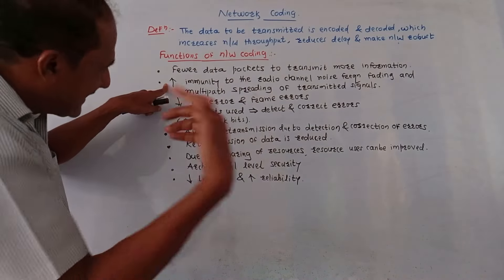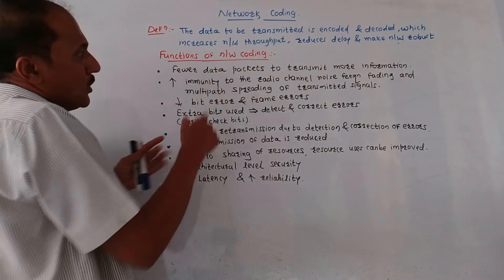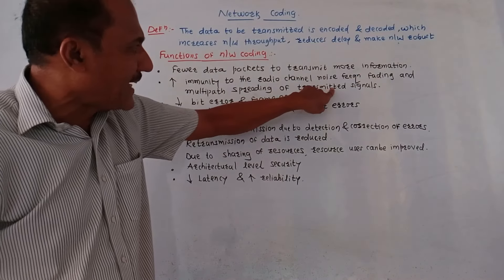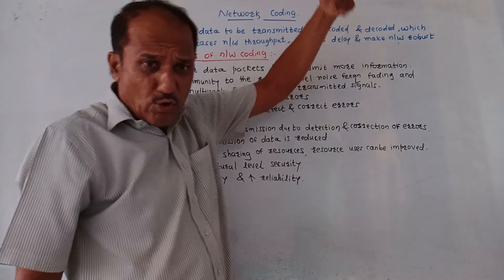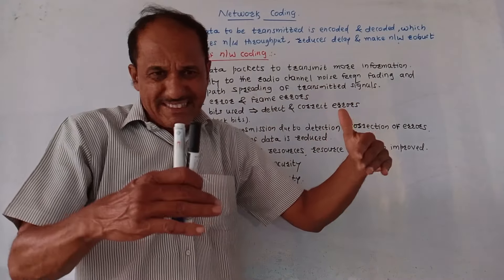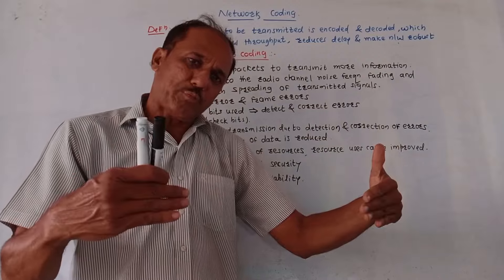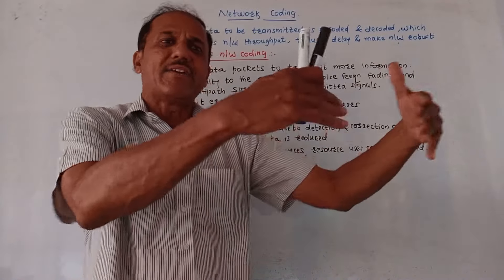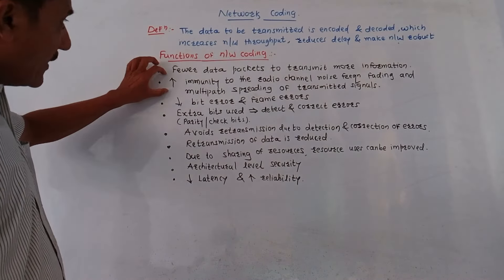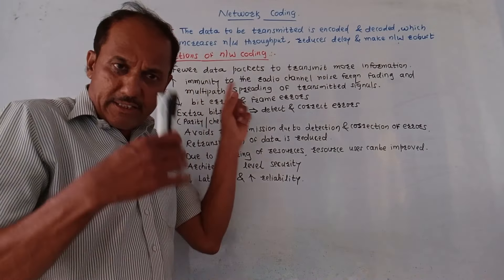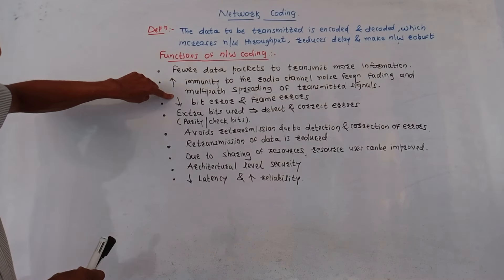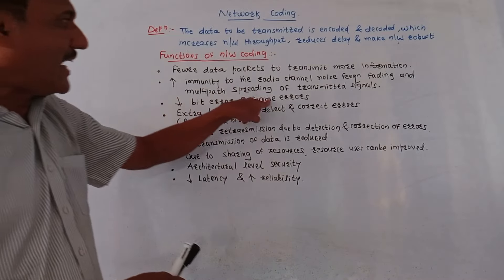Network coding increases immunity to radio channel noise, frequency fading, and multipath spreading of transmitted signals. Multipath spreading means many paths are used when signals are transmitted through the channel, and network coding provides immunity to all such effects. It also decreases bit error and frame error.